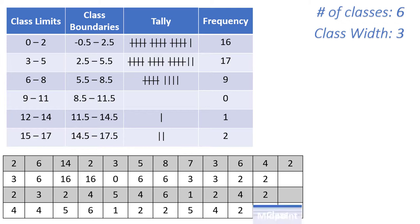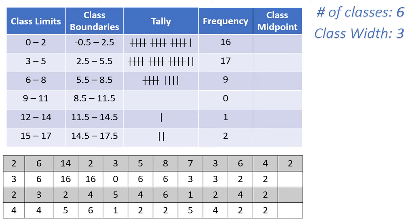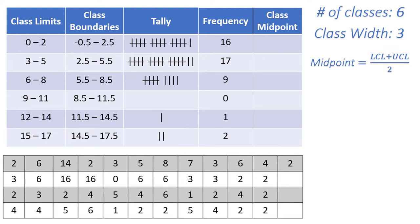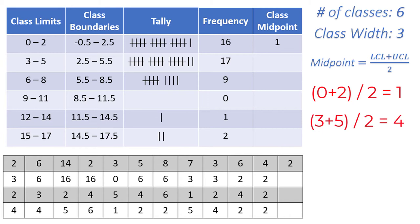Finally, we can create the class midpoint, which is simply a single value that represents each class. We can find the midpoint by adding the lower class limit and upper class limit together and then dividing by 2. You will frequently see these abbreviated as LCL and UCL. The midpoint is essentially the arithmetic mean between the lower and upper class limits. For our example: 0 plus 2 divided by 2 equals 1; 3 plus 5 divided by 2 equals 4; and so on for all 6 classes.